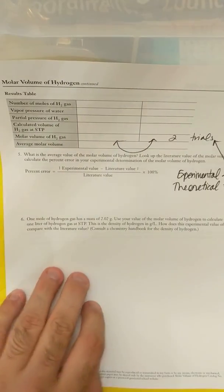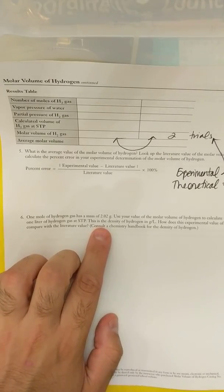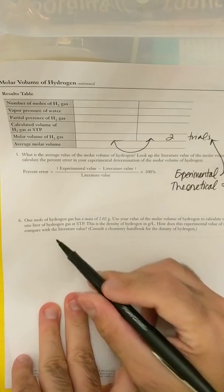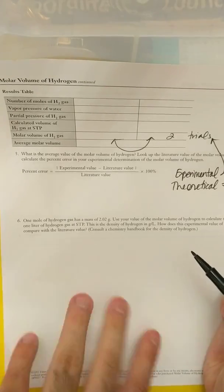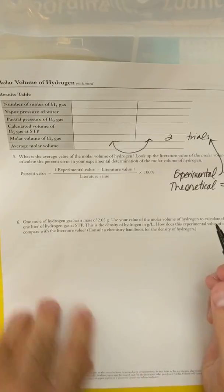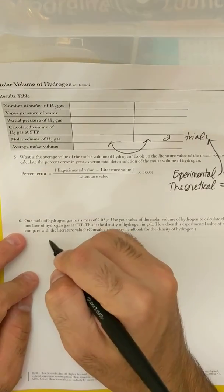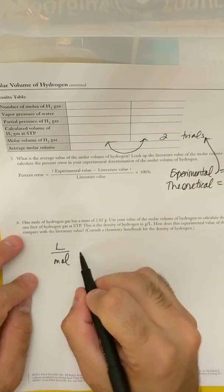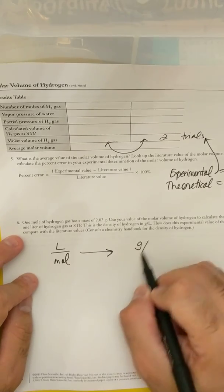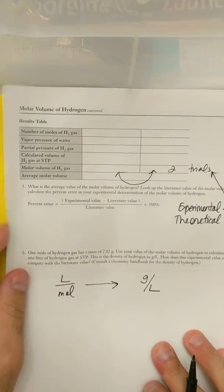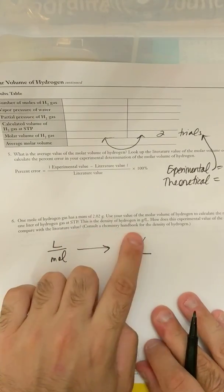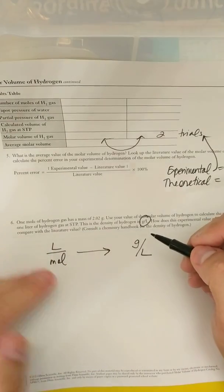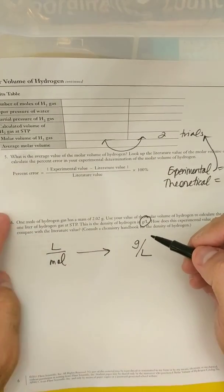And then it says one mole of hydrogen gas has a mass of 2.02 grams. Use your value of the molar volume of hydrogen to calculate the mass of one liter of hydrogen gas. This is the density. So basically, if I have the molar volume, my molar volume that you get is in liters per mole. What do I have to do in order for this to say grams over liters? Well, somehow, because it wants it in grams per liter, somehow I need to get my liters on the bottom and my moles on the top. So I have to flip this value in order for me to get liters on the bottom.